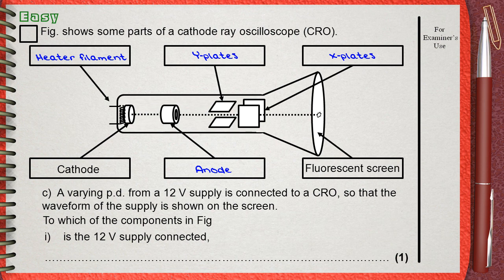As we studied before, we know that any external voltage that will be drawn on the cathode ray oscilloscope screen will be connected to the Y plates through the Y input, so the answer will be Y plates.